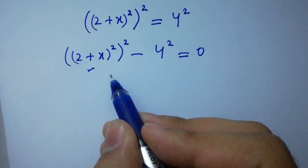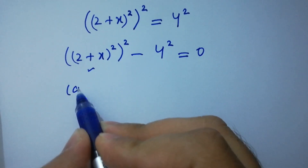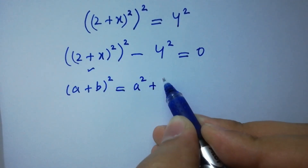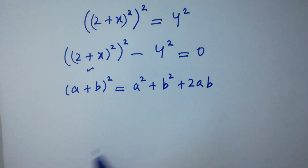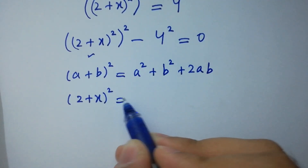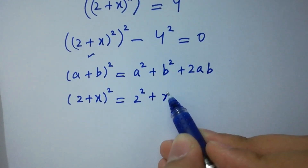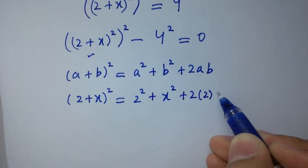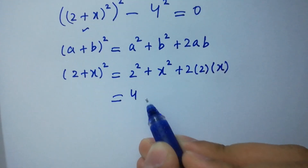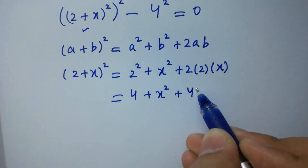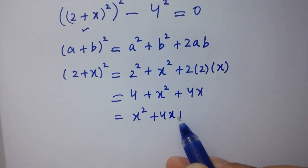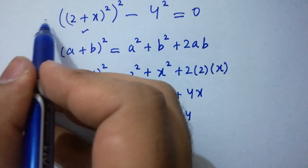So here (2 + x) whole squared — we know the formula: (a + b) whole squared equals a squared plus b squared plus 2ab. Then (2 + x) whole squared will be equal to 2 squared plus x squared plus 2 times 2 times x. Simplifying: 2 times 2 is 4, plus x squared, plus 2 times 2 is 4x, which is x squared plus 4x plus 4.